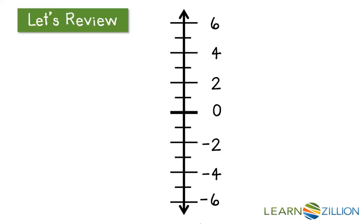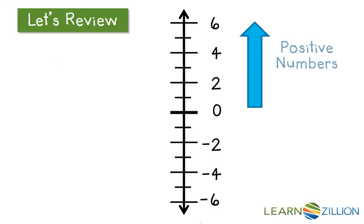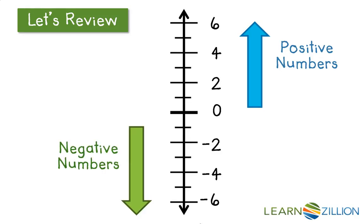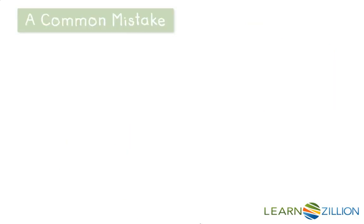Let's review. On a vertical number line, positive numbers go up from zero and negative numbers go down.